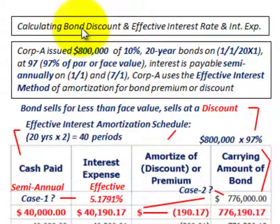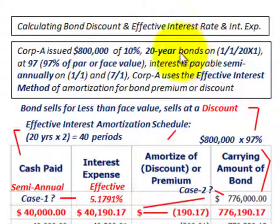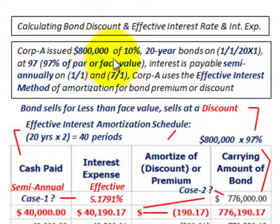Here we're going to be looking at calculating a bond issued at a discount, its effective interest rate, and also its interest expense. Corporation A issued $800,000 worth of bonds at a 10% face value interest rate for 20-year bonds on 1-1-20X1 at 97, which represents 97% of the par or face value. So they're going to issue them at 97% of $800,000. The interest is payable semi-annually on 1-1 and 7-1.